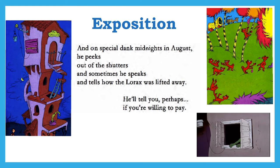In this case the story begins almost at the end — after the Lorax has already been gone for some time and the Onceler has become something of a recluse. We see a little boy looking for answers about the Lorax, where he went and what happened. Even in this structure you get a sense of the Onceler's character when the narrator says he'll only tell the story if you're willing to pay: 'He'll tell you perhaps if you're willing to pay.' We already get a hint at the Onceler's greed.